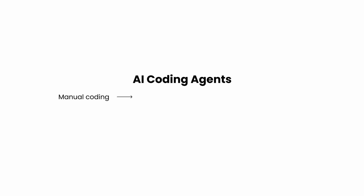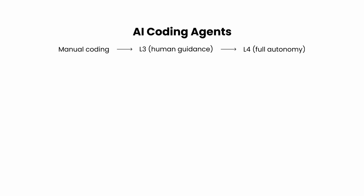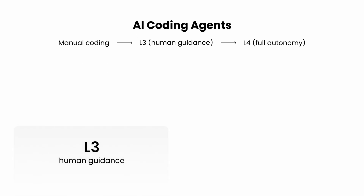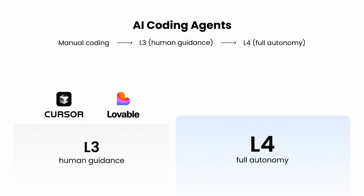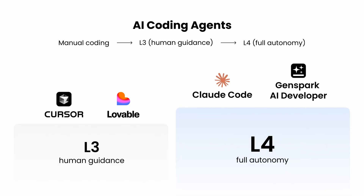Manual coding is fading. AI coding agents are shifting from L3 human guidance to L4 full autonomy. L3 agents like Cursor and Lovable are co-pilots — you still need to code. L4 flips it. Claude Code and GenSpark AI developer plan, code, test, and ship on their own. So even non-coders can build.